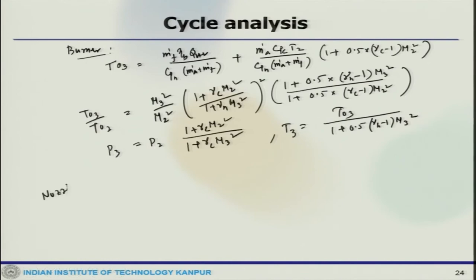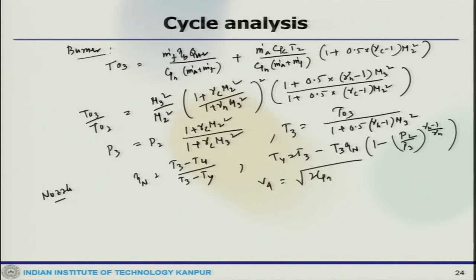Similarly, for the nozzle we will get Eta_N is T3 minus T4 by T3 minus T_y. So, T4 is T3 minus T3 times Eta_N times 1 minus P4 by P3 raised to gamma_H minus 1 by gamma_H.